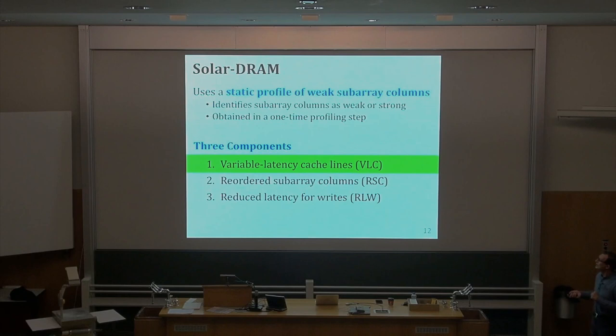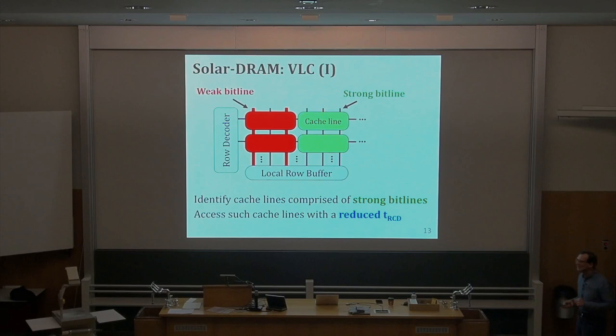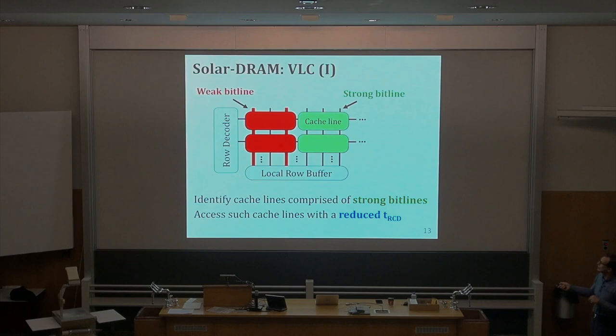Variable latency cache lines: identify cache lines comprised of strong bit lines and access them with low latencies. What we did at the row level earlier, we are doing now at the sub-array level. Cache lines that consist only of strong bit lines can be accessed with reduced tRCD.